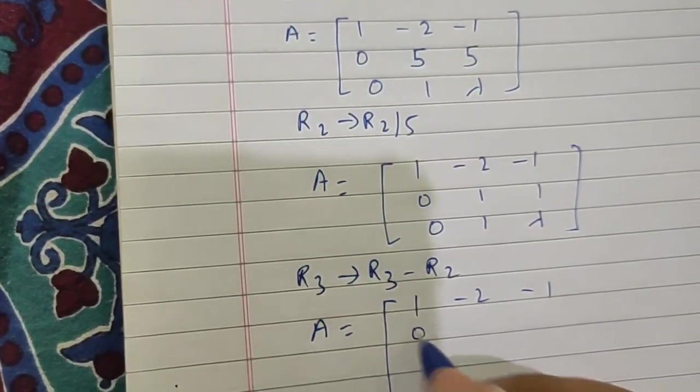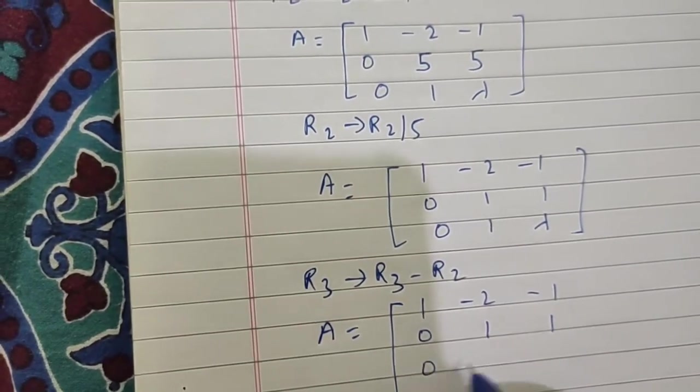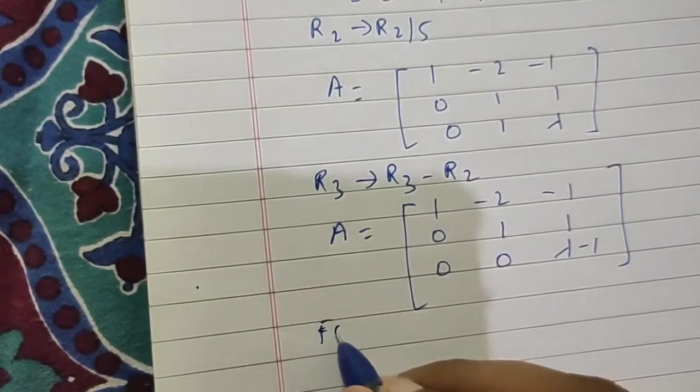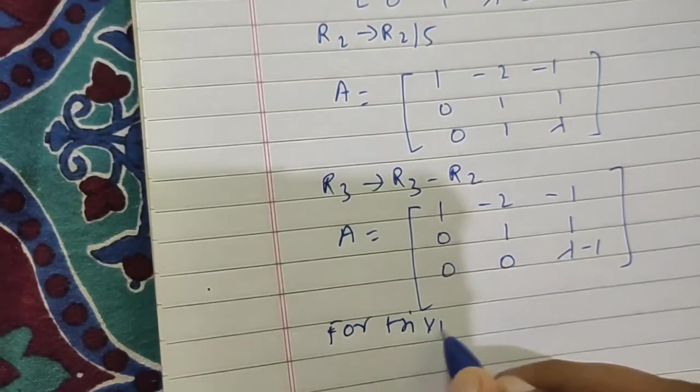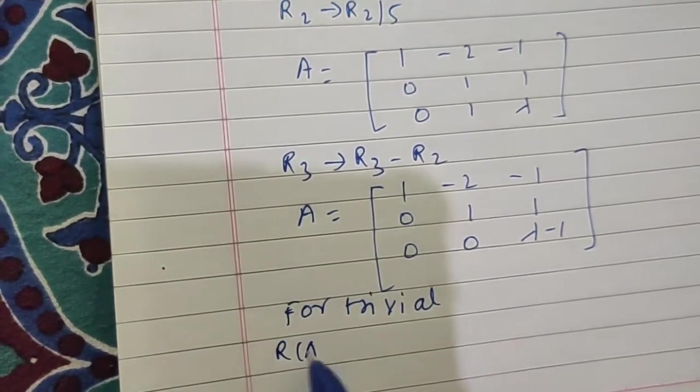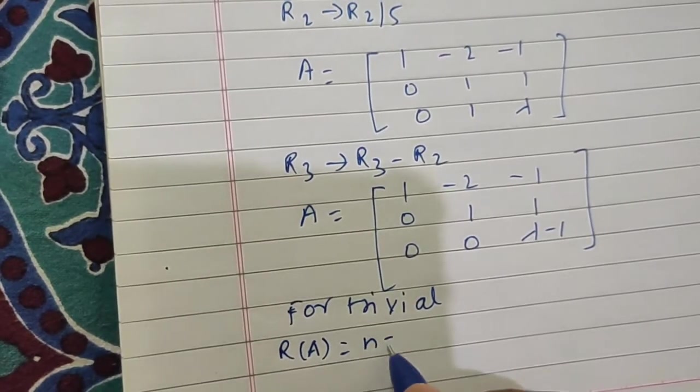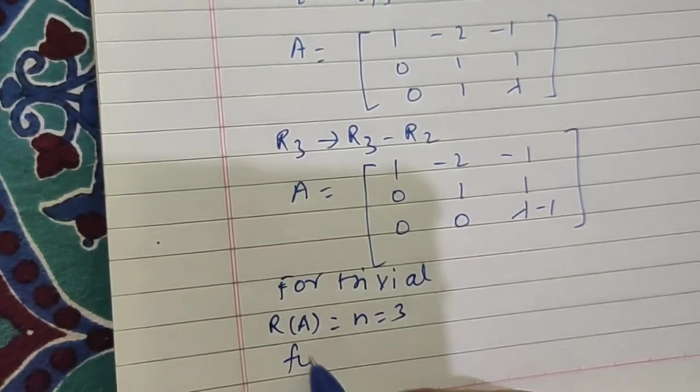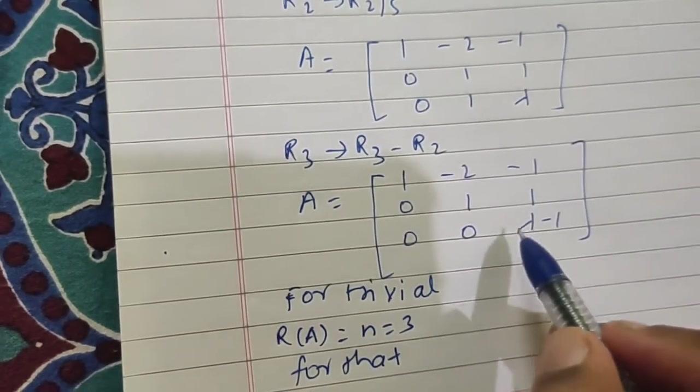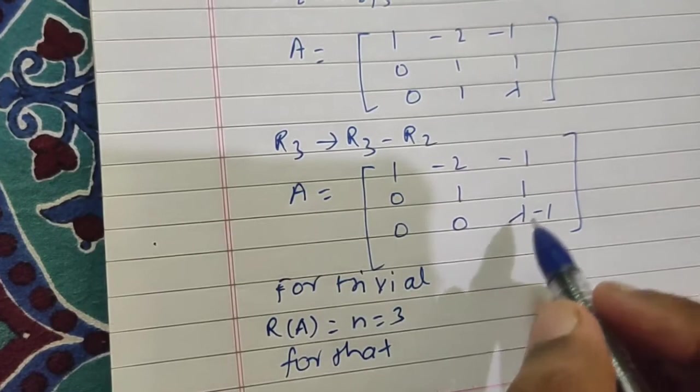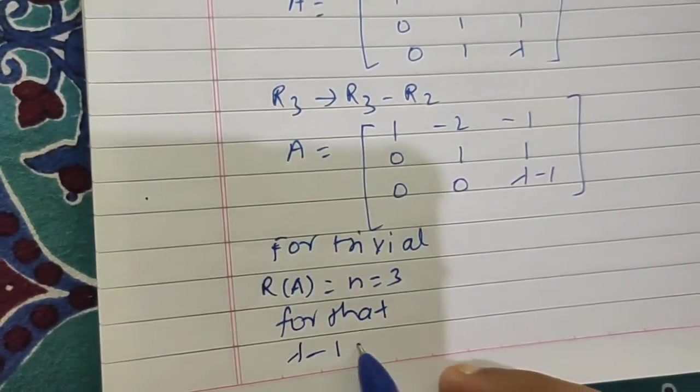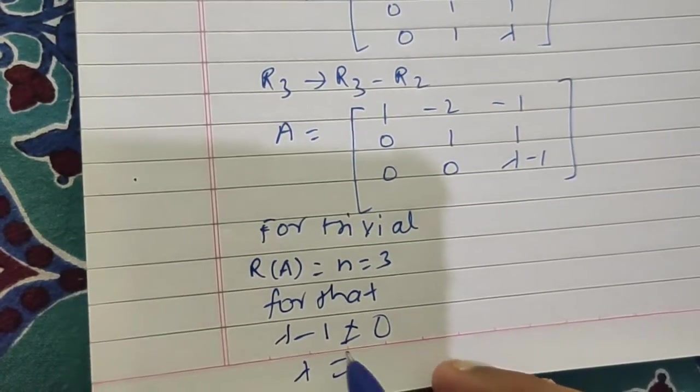For trivial, that means unique, rank of this matrix A should be equal to number of variables which is 3. For that, if you want rank to be 3, then this can't be 0. If this is non-zero then rank will be 3. So lambda minus 1 not equal to 0, lambda not equal to 1.